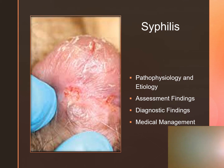Secondary syphilis may present with fever, malaise, rash, headache, sore throat, and lymph node enlargement. With the tertiary stage, tabes dorsalis — a degenerative condition of the CNS — may occur, along with ataxia, which is impaired balance or coordination. We may also see Charcot's joints, which is a neuropathic joint disease, and cardiovascular complications.